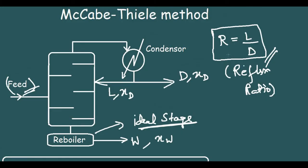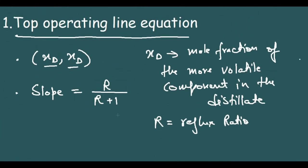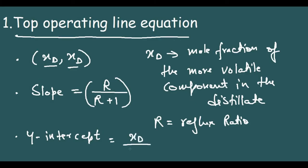The reflux ratio R equals L by D. The slope of the top operating line is R by R plus 1. The y-intercept of this line is equal to XD by R plus 1. Knowing these three properties, we can construct this line in the graph.